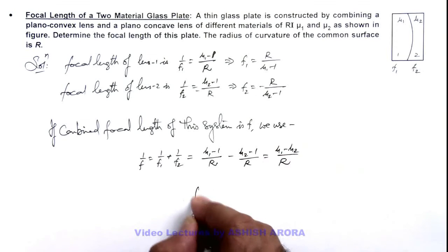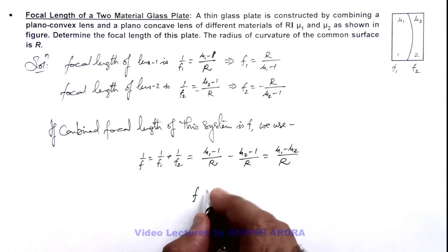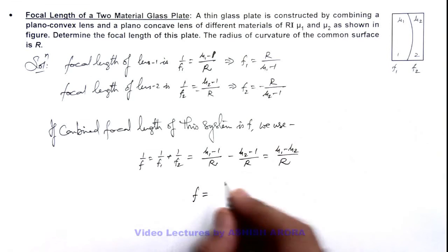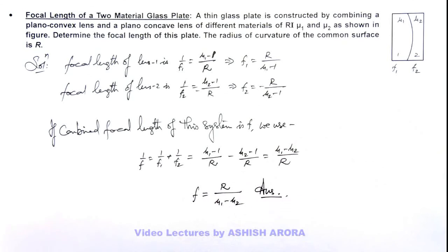So the focal length of this combined glass plate or two-material glass plate can be written as r divided by mu 1 minus mu 2. That will be the answer to this problem.